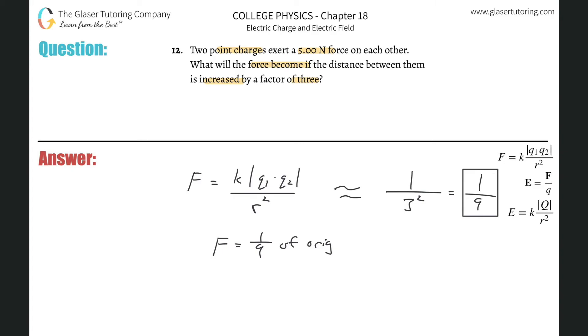So if the original was five newtons, what's one ninth of five newtons? Simple, just multiply by one ninth. And that's it. So it's five ninths. So five over nine, you can get that in terms of a decimal if you like.